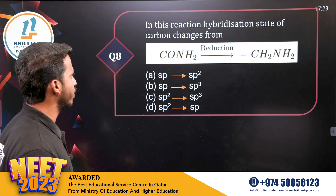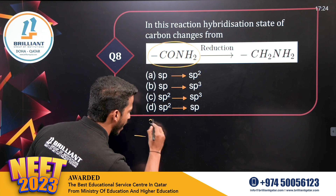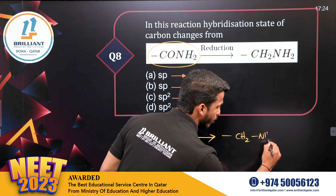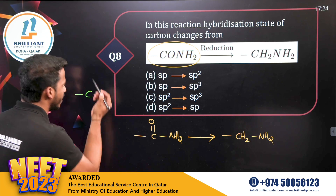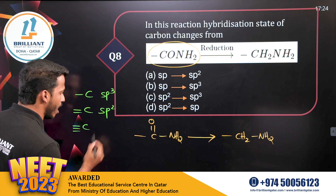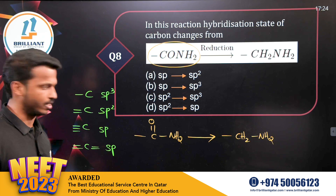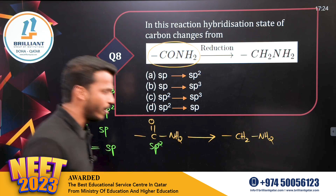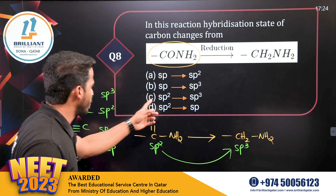Question number eight: in this reaction, CONH₂ is an amide. Amide on reduction gives an amine. The question asks about the change in hybridization of carbon. Single-bonded carbons are sp³ hybridized; a double-bonded carbon is sp² hybridized; triple-bonded carbon is sp hybridized. In the amide, the carbonyl carbon has a double bond — it is sp². After reduction, that carbon is fully single-bonded — it becomes sp³. So the hybridization changes from sp² to sp³. Option C.